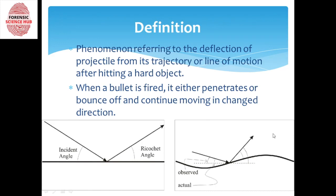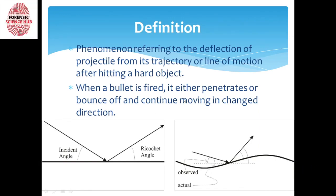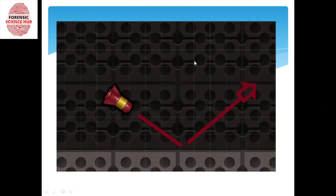Whenever a bullet is fired it has two options: either it can penetrate inside the target, or it can bounce off and continue moving in a changed direction. What happens in ricochet is that the bullet is unable to penetrate — penetration doesn't happen and the bullet bounces off, changing its path and angle.